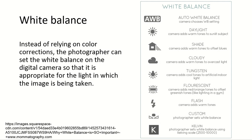White balance: instead of color corrections, the camera itself selects what type of setting will be appropriate for the light in which the image is being taken. Various options include: auto white balance, where the camera chooses WB settings; daylight, where the camera adds warm tones to sunlit subjects; shade, where the camera adds warm tones to offset blues; cloudy, where the camera adds warm tones to overcast light; tungsten, which adds cool tones to artificial indoor light; fluorescent, which adds red or orange tones to offset greenish tones; flash, to add warm tones; custom, where the photographer sets white balance; and Kelvin, where the photographer sets white balance using the Kelvin scale.